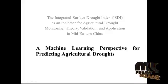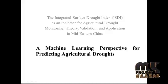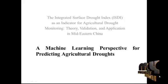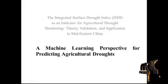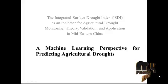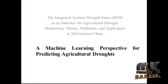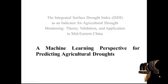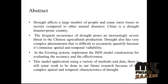The main objective of this process is to predict agricultural droughts in mid-eastern China areas by using rainfall precipitation rates over the years 2010 to 2014. We are going to predict agricultural droughts using a machine learning approach, specifically an algorithm called the Naive Bayes classifier.